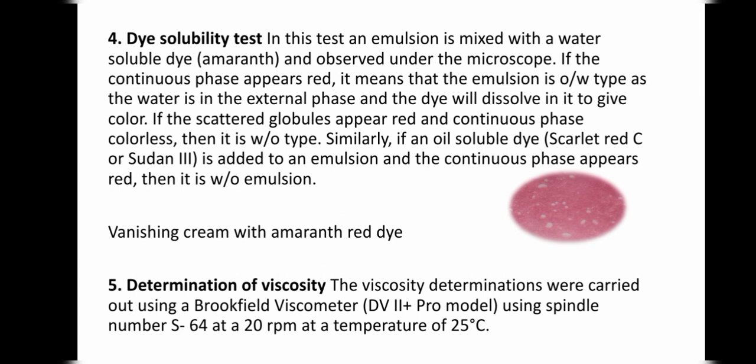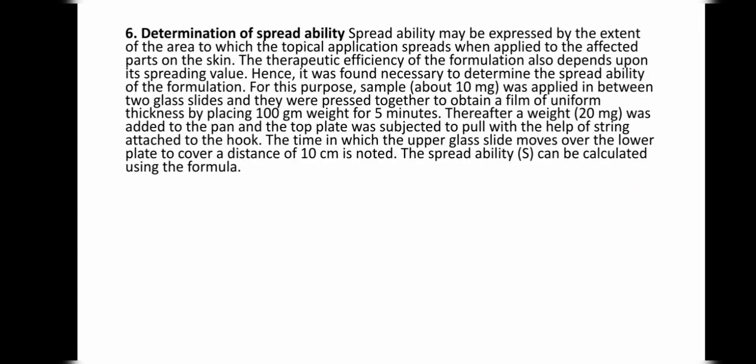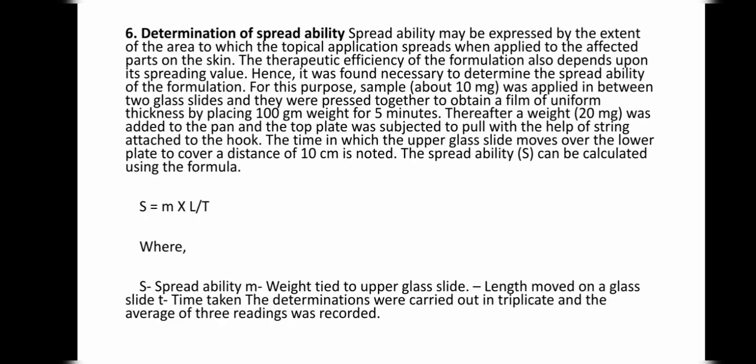For determination of viscosity, a Brookfield viscometer model DV2PLUS PRO is used with spindle number S64 at 20 RPM and at a temperature of 25°C. Spreadability is also a very important test in cosmetic formulation. For spreadability, two slides, weights, and a timer are required. Using the formula S = M × L / T, we can get the value of S (spreadability).